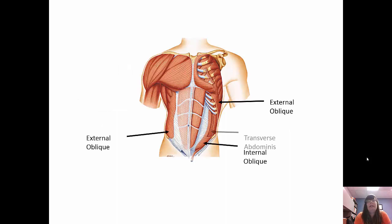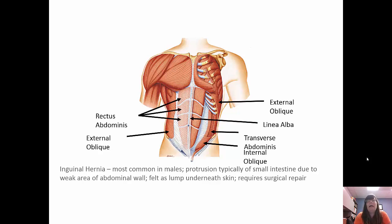Here are the external obliques, internal obliques, transverse abdominis, rectus abdominis, and the linea alba. An inguinal hernia is most common in males and is a protrusion, usually of the small intestine, through the abdominal wall — typically because the abdominal wall became weak. It's felt like a lump underneath the skin, requires surgical repair, and if it gets worse, more intestine could come through with serious consequences.